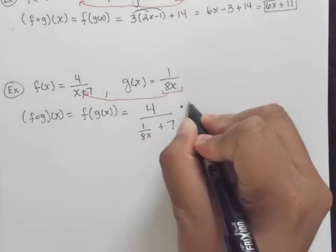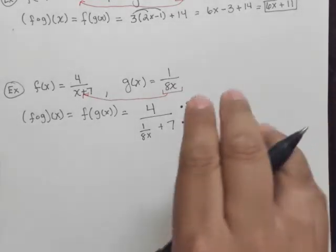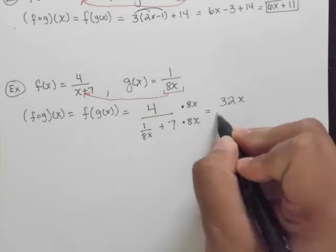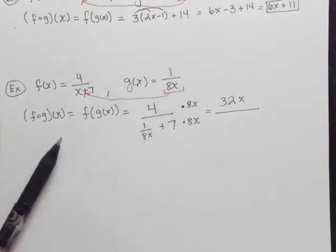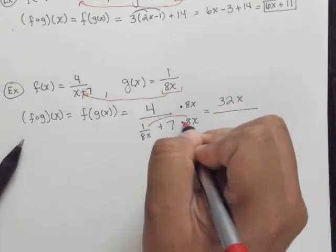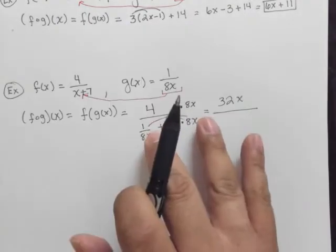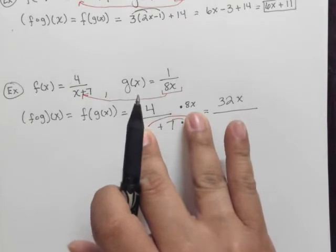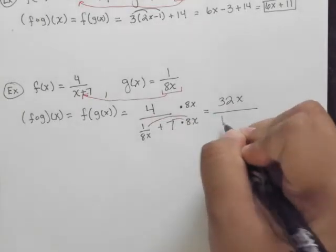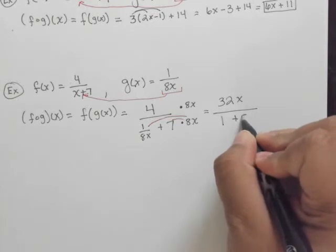So what we're going to do is multiply the top, the numerator, and the bottom, the denominator, by 8x. So just multiply straight across here and you get 32x. And then in the bottom, when you distribute this, so let me just show you some distribution. There you go. 8x times 1 over 8x, well look at what happens. It eliminates itself. It crosses out. So 8x times 1 over 8x is simply 1, and 8x times 7 is 56x.